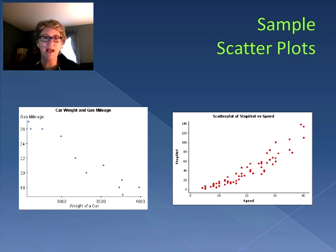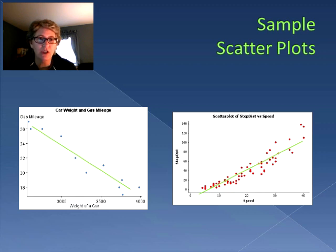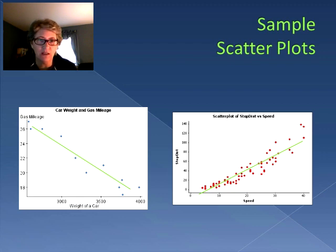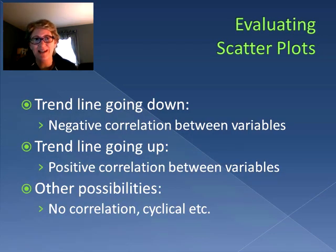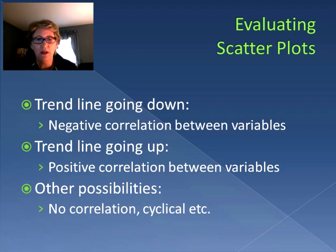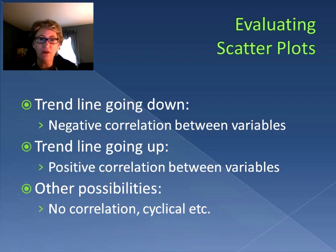To help us examine this more clearly, we can add trend lines. These trend lines are linear lines that show the relationship between the two variables. The trend line doesn't fit exactly to the dots, but it takes all those dots into consideration and creates a linear line. If the trend line goes down, it shows a negative correlation — as one variable increases, the other decreases — like car weight going up while gas mileage goes down. A trend line going up means a positive correlation, where as one variable increases so does the other, as with speed and stopping distance.